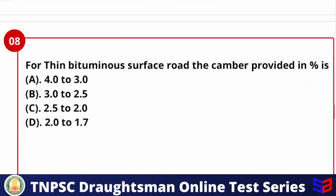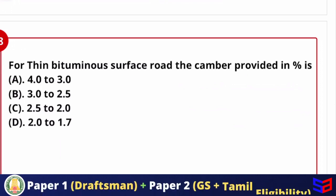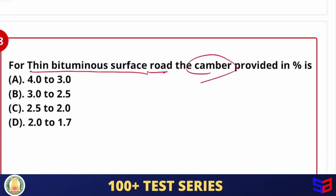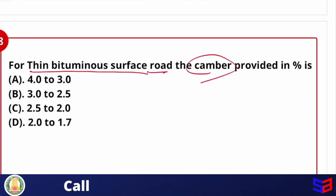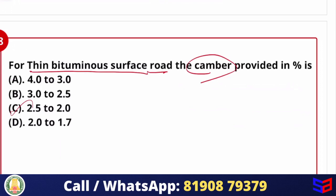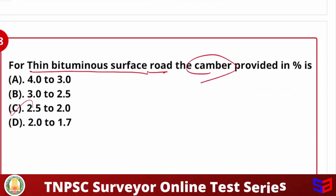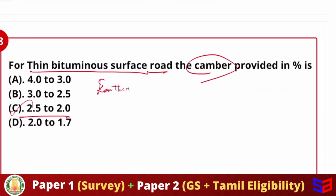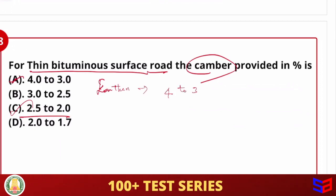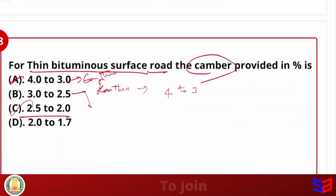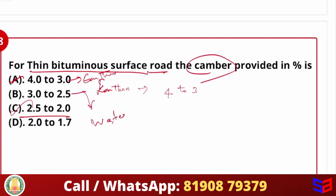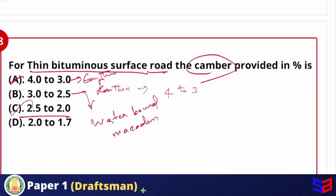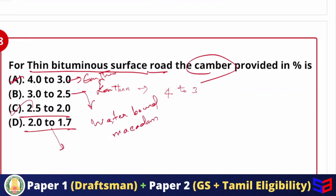Next question: for a thin bituminous surface road, the camber provided is what percentage? Based on IRC recommendations, for thin bituminous roads, the camber provided is 2.5 to 2 percent. For earthen roads it is higher (4 to 3 percent), and for water-bound macadam and gravel roads there is a different value.